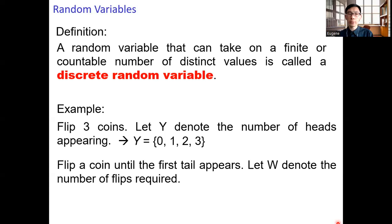Let's take a look at another scenario. You flip a coin until the first tail appears. Let the random variable W denote the number of flips required. The minimum value must be 1 — you must have the first flip in order to get the first tail. If the first flip is a head, you need to take the second flip, and if that is also a head, you need to take the third flip, and so on until you get a tail. So W can take on values 1, 2, 3, up to infinity.